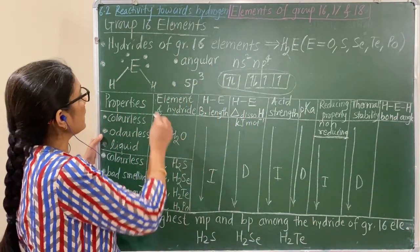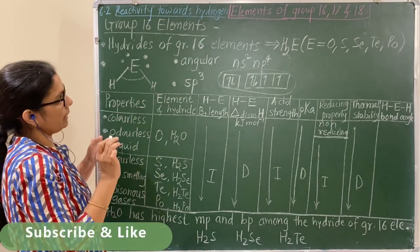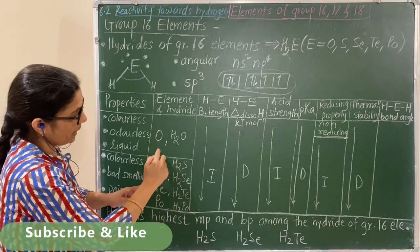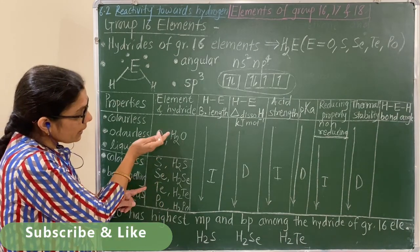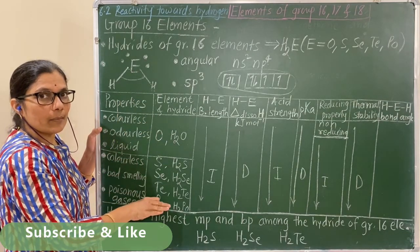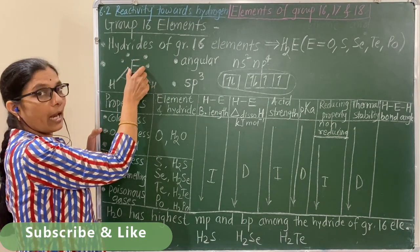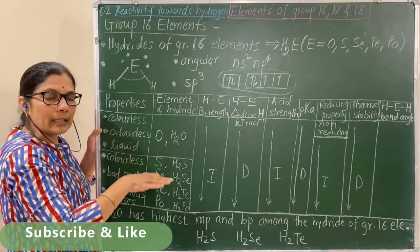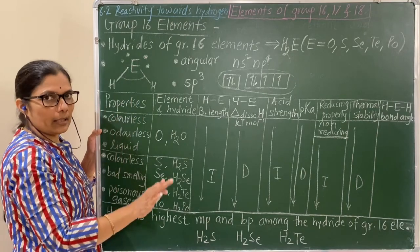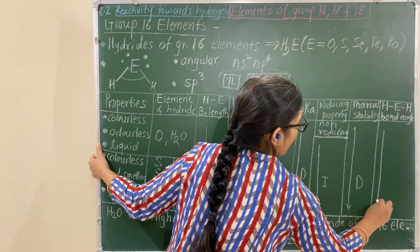Bond angle: as the size of the group 16 central atom increases down the group and electronegativity decreases, the electron density on the central atom goes on decreasing. Therefore, electron pair repulsion decreases, and consequently the H–E–H bond angle also decreases down the group.